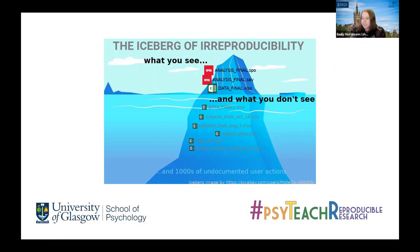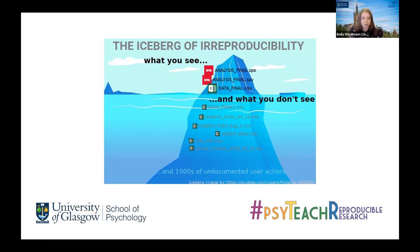There are two components to how we've dealt with this at Glasgow: the first is about data skills, and the second is about embedding reproducibility and open science into the curriculum. I'm going to give a brief overview of the curriculum and then go into detail on two case studies — our first-year course and the MSc conversion program research methods course, because those are the courses I've developed since I moved to Glasgow.